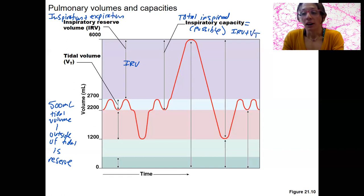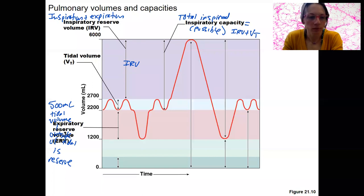We've also got an expiratory reserve volume. That's down there, kind of covered up. So erase this, ERV. That's the amount you can expire on top of what you do with your just resting breath.